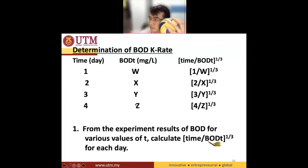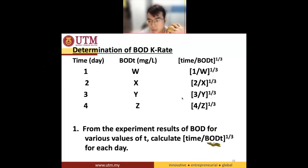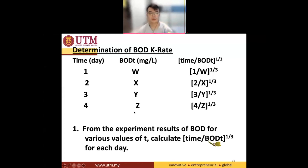Then you have the third bottle. Measure the BOD and you get the BOD to be Y, and then calculate the value for this. Then take the fourth bottle and measure it after the fourth day, and you obtain your BOD to be Z. Calculate the value: 4 divided by Z, to the power of one third.